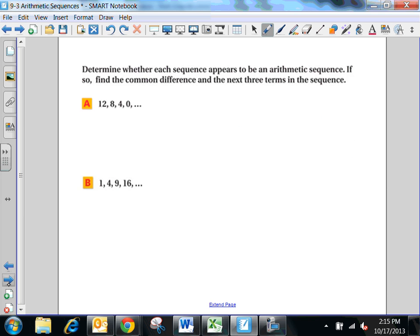So this one just says determine whether each sequence appears to be arithmetic or not. If so, find the common difference. The common difference, we say, is D and the next three terms in the sequence. So the very first thing we do is we find the difference between the terms. This one is subtracting 4, subtracting 4, subtracting 4. So it's subtracting 4 every time. So we say D is negative 4. So it's adding negative 4 every time. So the next three terms in the sequence, I would just continue to carry out the sequence and figure out what the next three terms would be. So for this sequence, they would be negative 4, 0 minus 4, negative 8, and negative 12.